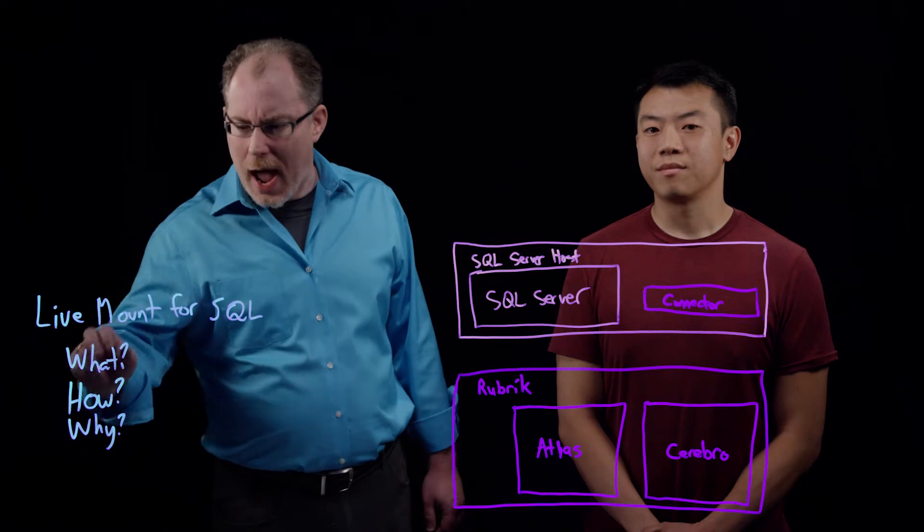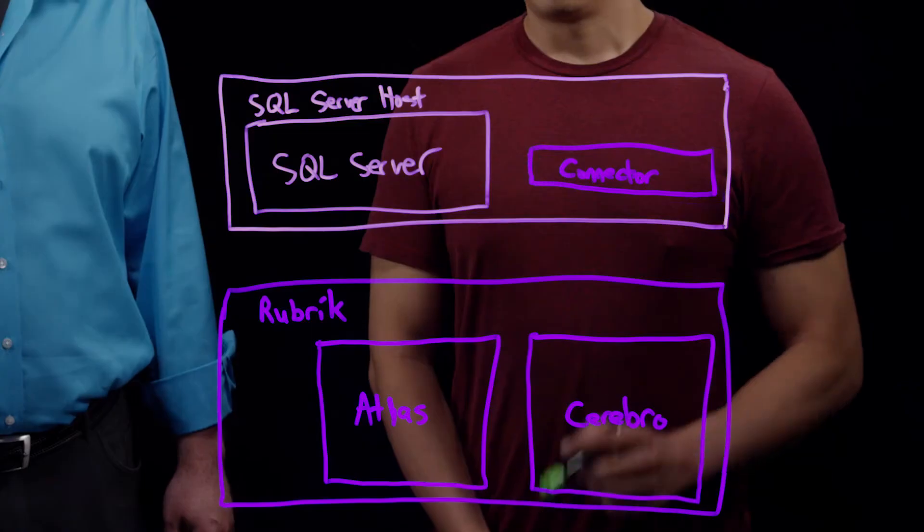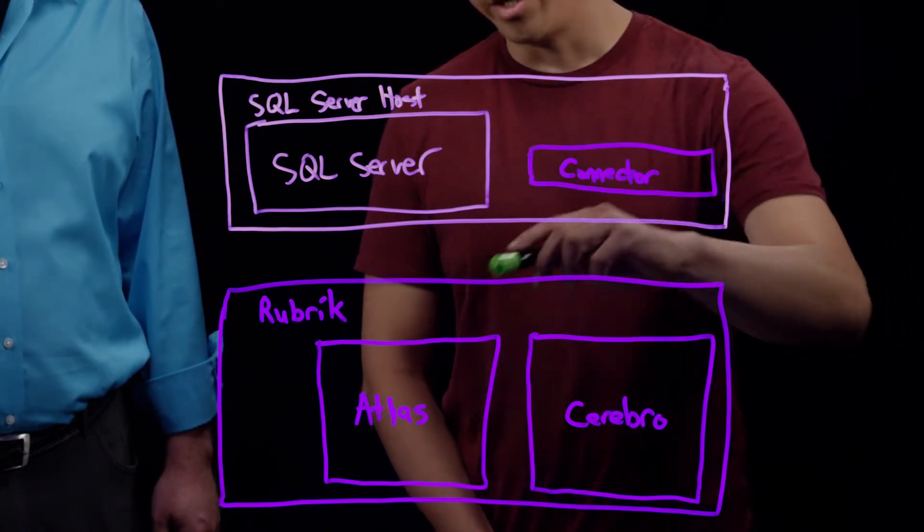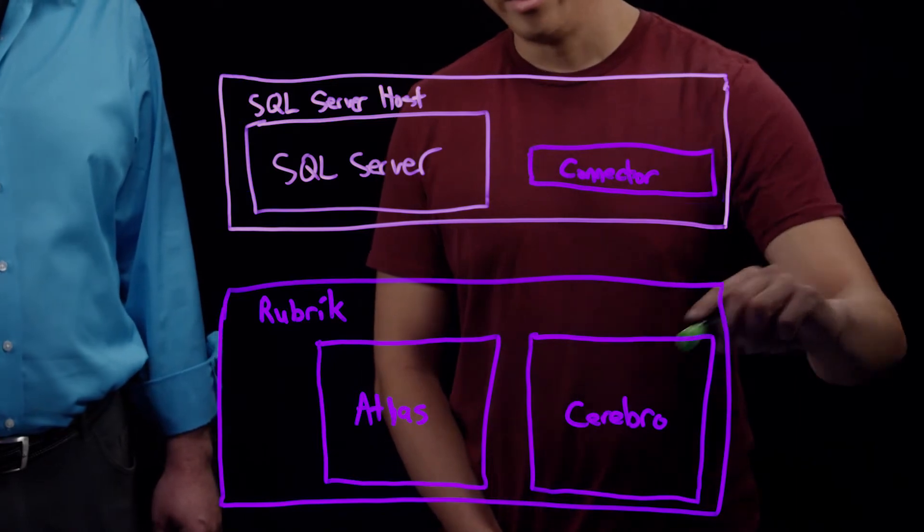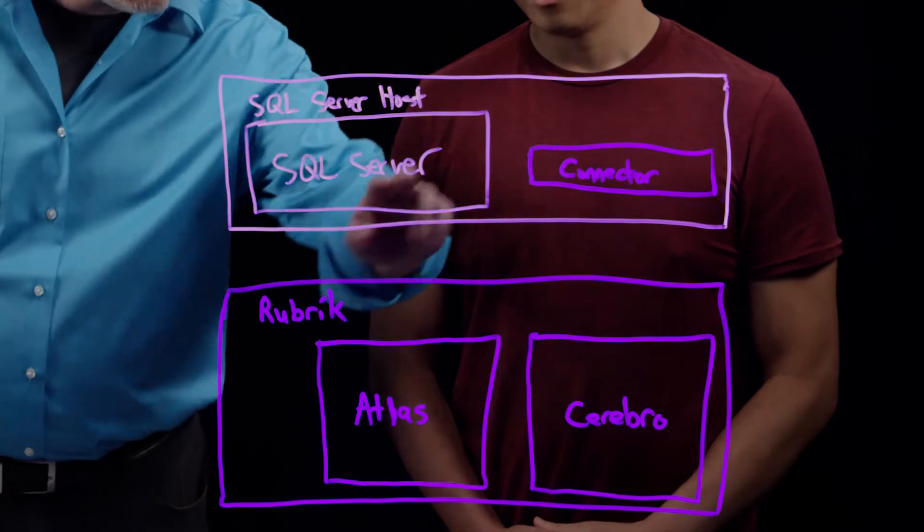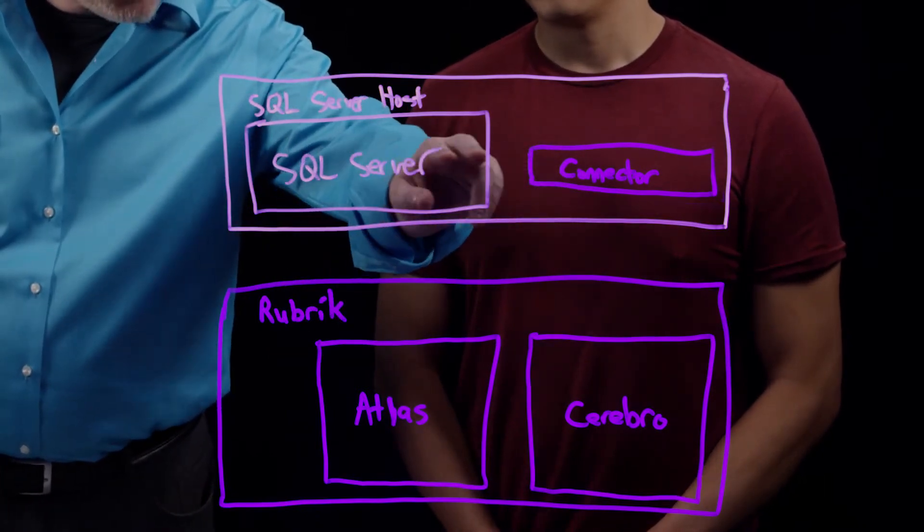That leads us directly into the how of how it works. Do you mind walking through that a little bit more, Kenny? So here we have a Rubrik cluster and a SQL Server host. In the Rubrik cluster, we have the Atlas distributed file system, the Cerebro data management layer, and a little connector on the SQL Server host itself. The connector is what talks to SQL Server, manages the incremental forever nature of the backup,